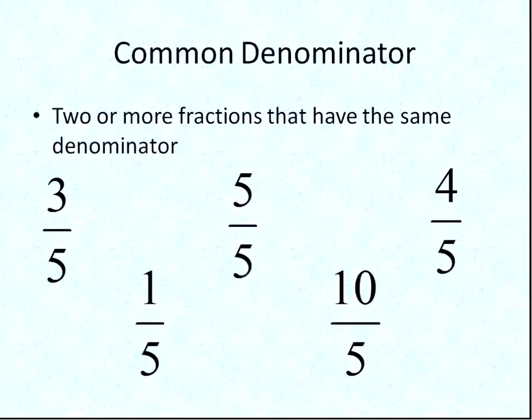Now, a common denominator is two or more fractions that have the same denominator. So this is 3/5, 1/5, 5/5, 10/5, 4/5. You notice they're not all in lowest terms, and they're definitely not in any kind of order as far as the size of them. They just have common denominators with the same number on the bottom.